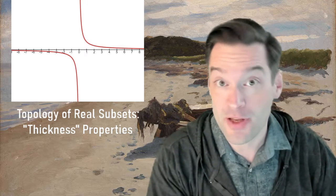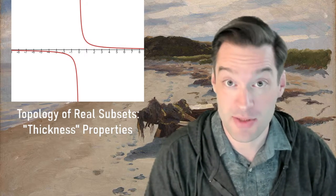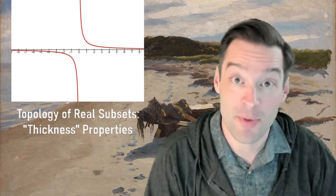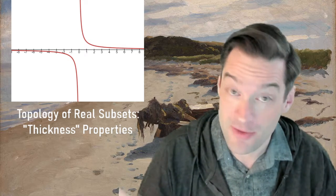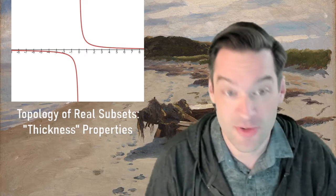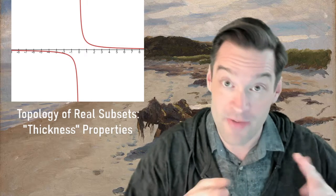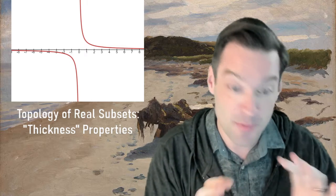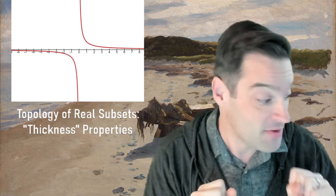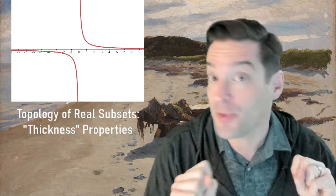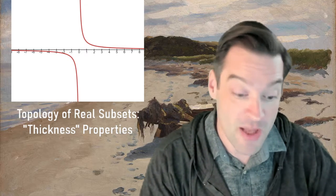In the next few videos, we want to look at some new topological properties of sets that I call the thickness properties. They can help us talk about how much of a set there is — how much a set resembles an interval versus how much it resembles some scattered, discrete set of points.